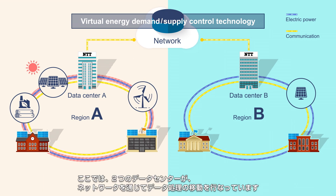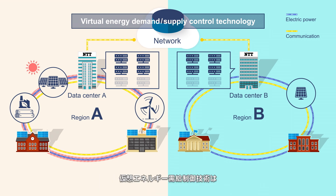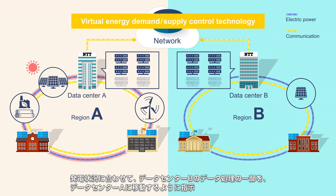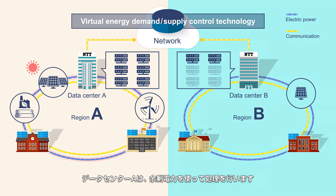In this example, two data centers transfer their data processing load to each other via a network. Depending on the amount of power generation, virtual energy demand supply control technology decides to transfer a part of the data processing load from data center B to data center A. Data center A then executes this data processing work using surplus power.